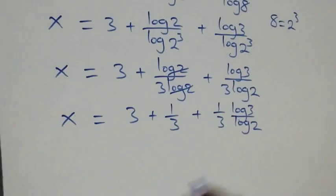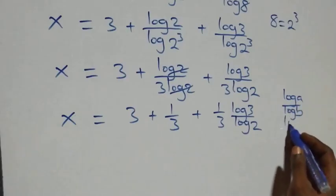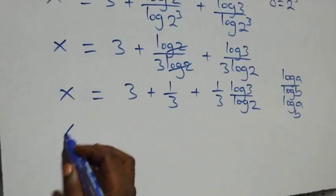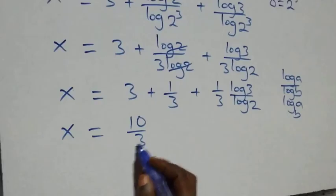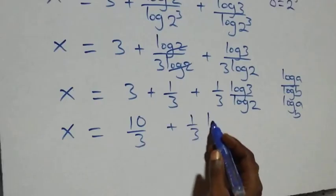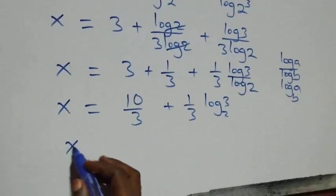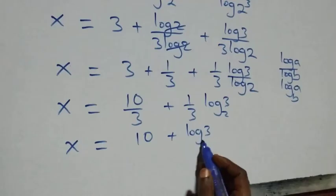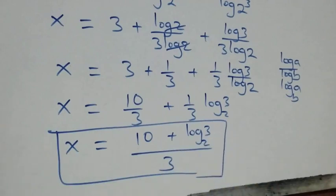Applying the change of base formula — log a over log b equals log a to base b — we have log three over log two equals log three base two. So x equals three plus one over three plus one over three times log three base two. Factoring out one over three, and noting three plus one over three equals ten over three, we get x equals ten plus log three base two, all over three.